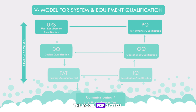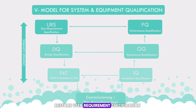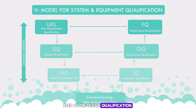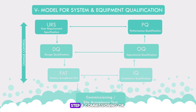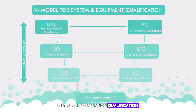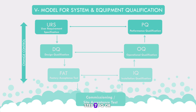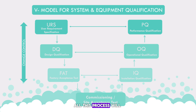The model for system and equipment qualification consists of: Step 1 — URS (User Requirement Specification), Step 2 — DQ (Design Qualification), Step 3 — FAT (Factory Acceptance Test), Step 4 — Commissioning or Site Acceptance Test, Step 5 — IQ (Installation Qualification), Step 6 — OQ (Operational Qualification), Step 7 — PQ (Performance Qualification). All of this process is carried out using change control.